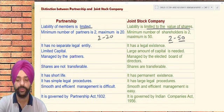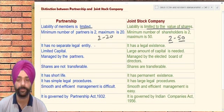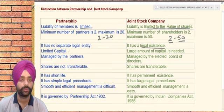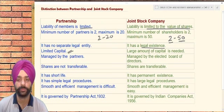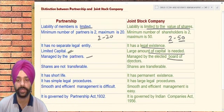A partnership firm has no separate legal identity — the partners and the firm are considered as a singular entity. But in case of a joint stock company, the company has a separate legal existence. For a partnership, the capital is limited, but for a joint stock company, a large amount of capital is required. A partnership firm is managed by partners, whereas a joint stock company is managed by an elected board of directors.